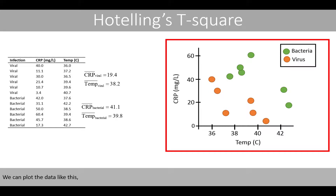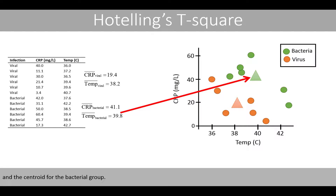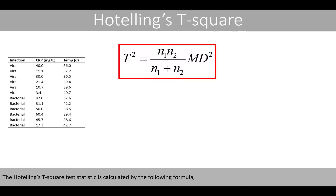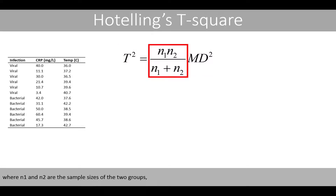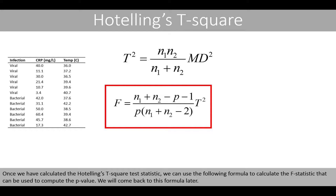We can plot the data and add the centroid for the viral group and the centroid for the bacterial group. The Hotelling's t-squared statistic is based on the Mahalanobis distance between the two group centroids, meaning it takes into account the relationship between the dependent variables in its calculations. The Hotelling's t-squared test statistic is calculated by the following formula, where n1 and n2 are the sample sizes of the two groups, and md is the Mahalanobis distance between the distributions of the two groups. Once we have the test statistic, we use another formula to calculate the F-statistic for the p-value — we will come back to this formula later.